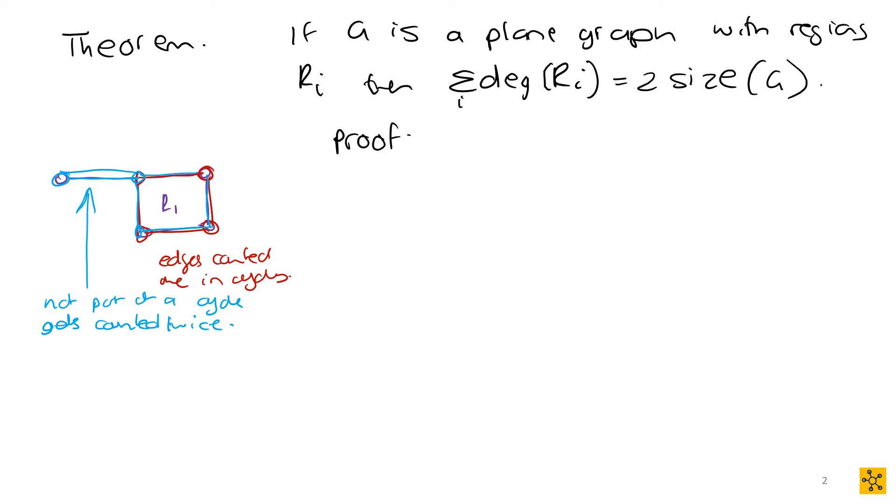So our proof: if E is on a cycle, so if you have any edge, any arbitrary edge on a cycle, then E lies in two regions. And that kind of makes sense when you think about it, because if you have a cycle, you're enclosing something, right? And the moment you enclose something, you have an inside and an outside area. So that's what we're saying here. If E is on a cycle, it's going to lie in two regions.